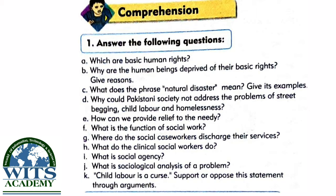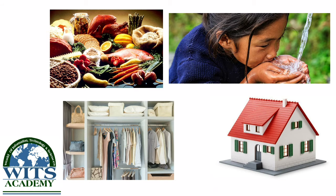Coming to comprehension focus, our question is: answer the following questions. Question A: which are basic human rights? The answer is: the basic human rights are something to eat, something to wear, and somewhere to live in.